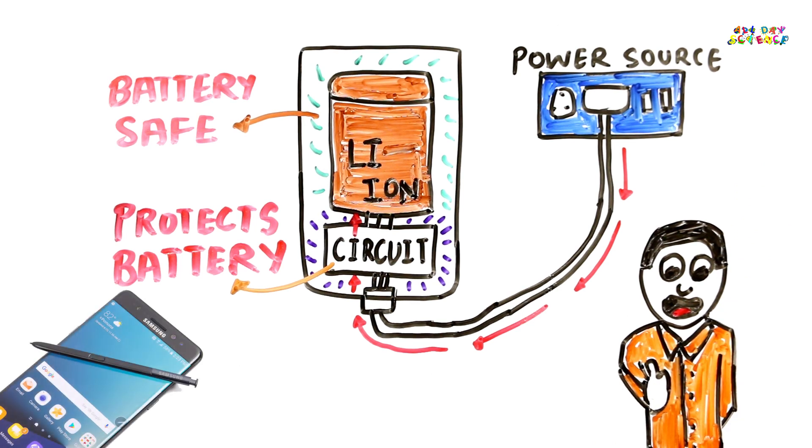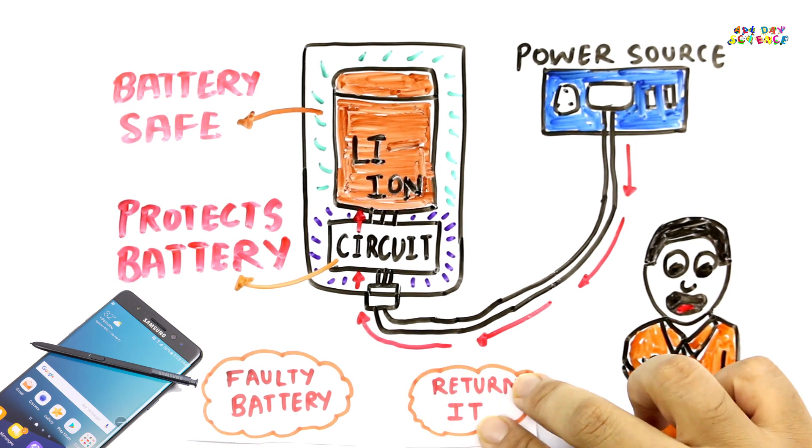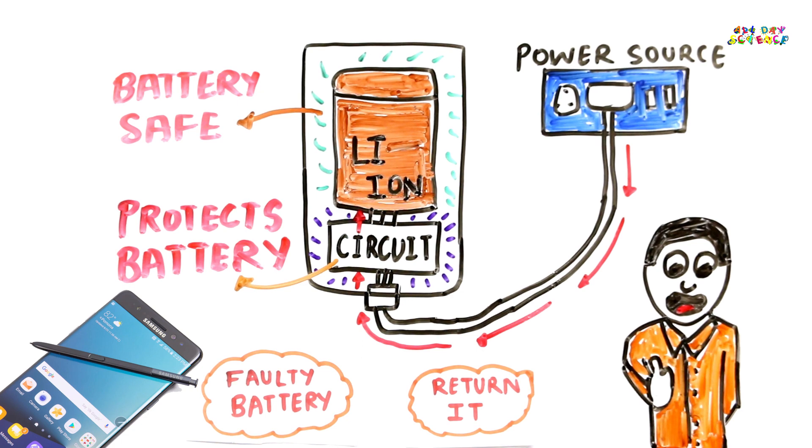Well, in case of Note 7, Samsung has confirmed that it's a fault in the battery that's causing it to explode. If by chance you're having a Note 7 and it gets extremely hot while charging, avoid charging it for the whole night and return it as soon as possible.